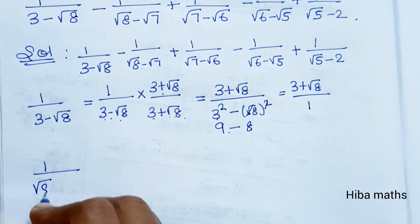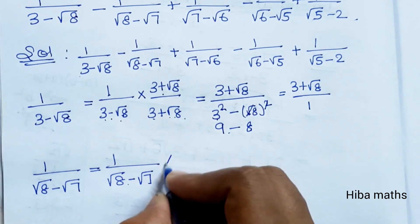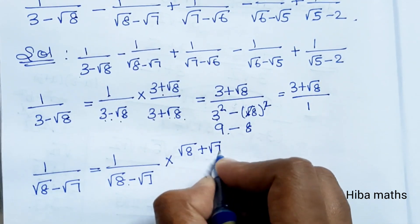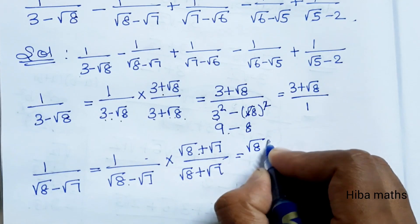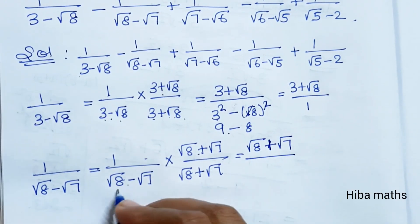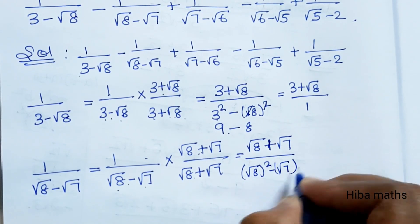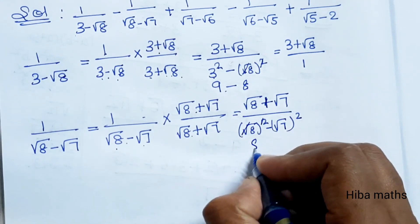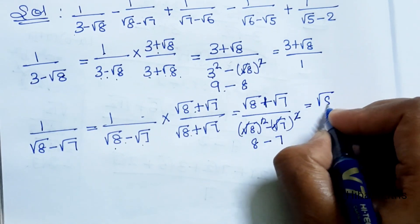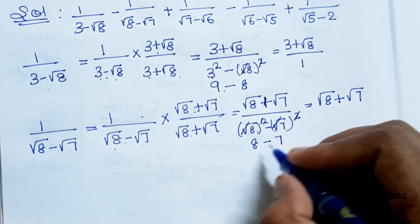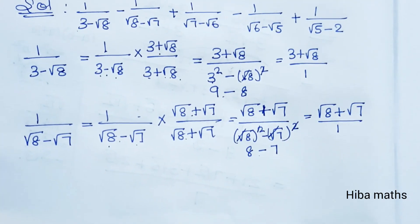For the second term, 1/(√8 - √7), multiply by the conjugate (√8 + √7): we get (√8 + √7) divided by (√8)² - (√7)² = 8 - 7 = 1. So the second term simplifies to √8 + √7. We write it in the numerator.